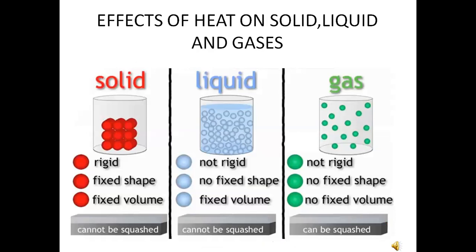Effects of heat on solids, liquids, and gases: upon heating, particle arrangement within the state of matter gets disturbed. The disturbance is seen as expansion or contraction. When heated or cooled, an object may expand or contract, but the mass remains the same — the number of particles does not change, only their arrangement changes. When a glass of water is heated its volume increases; when cooled its volume decreases. Solids have rigid fixed shape and fixed volume. Liquids have no fixed shape but fixed volume. Gases have no fixed shape and no fixed volume.